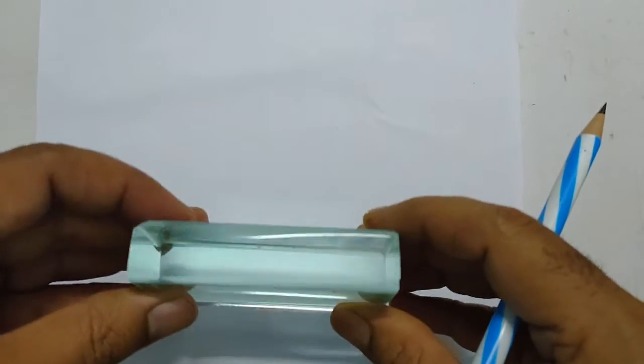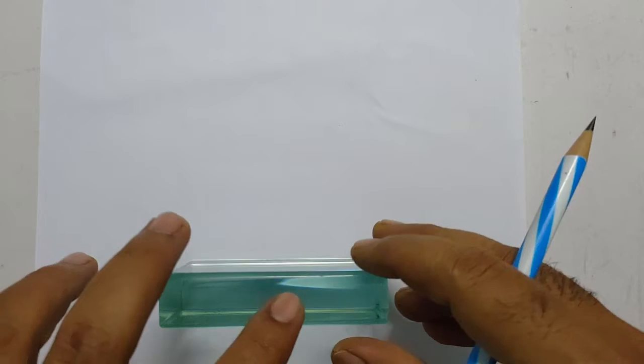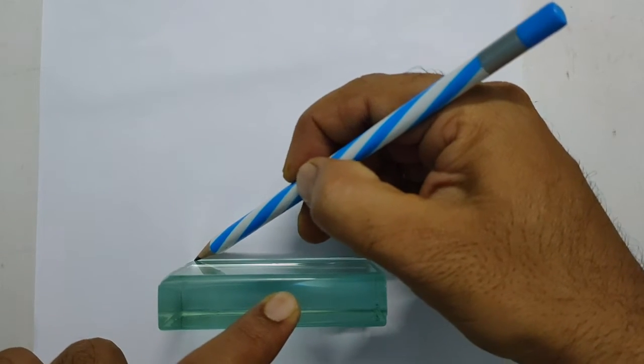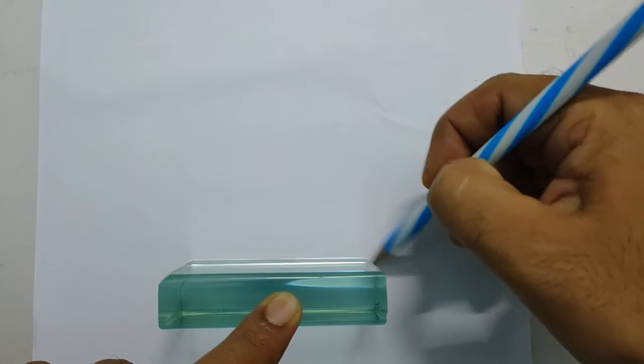Take a white chart and fix it on the table. Take the slab and place it in the middle of the chart. Now draw the boundary line with the help of a pencil. Now remove the slab from its place.